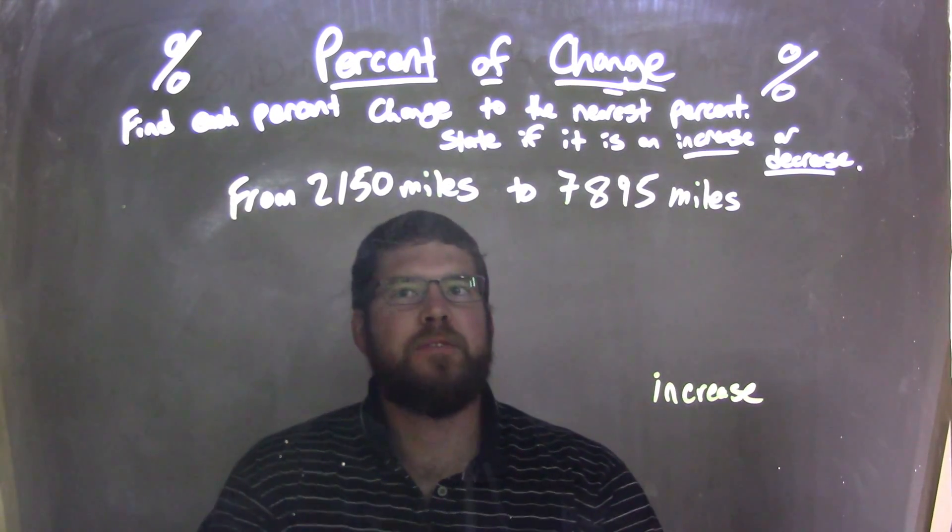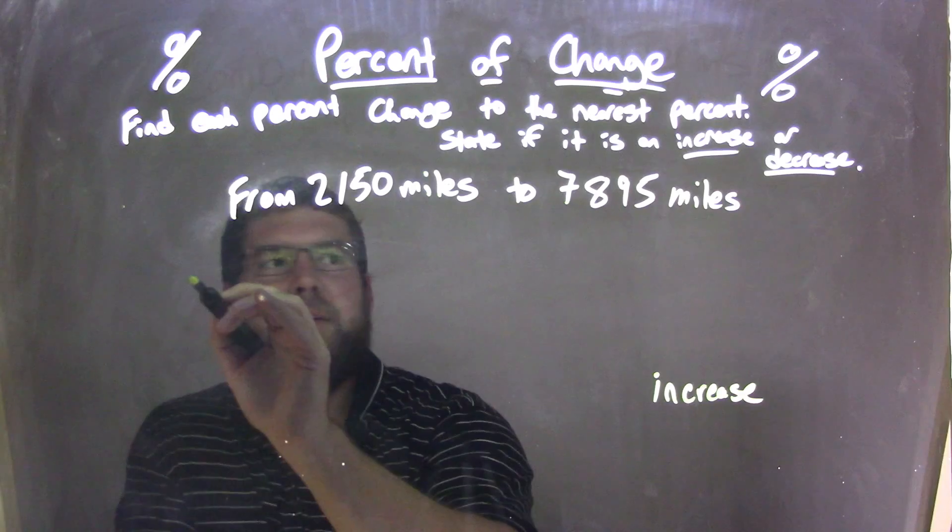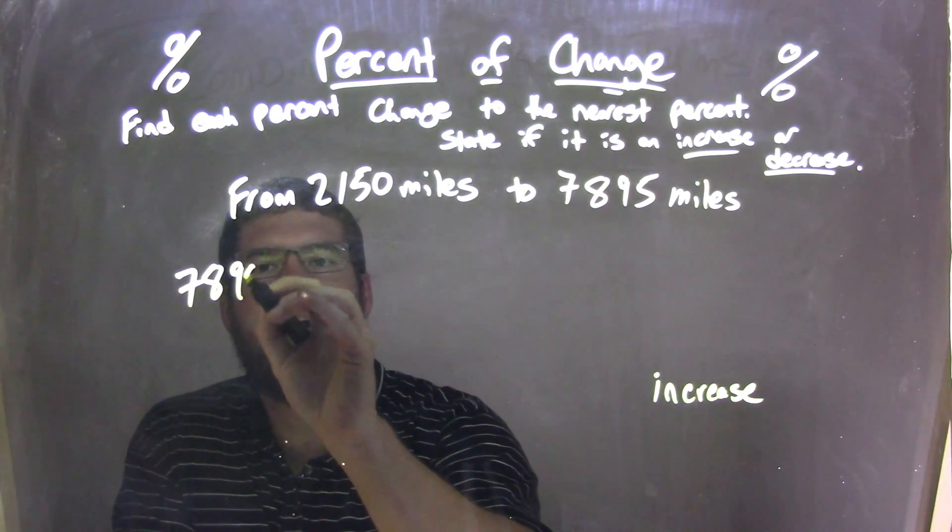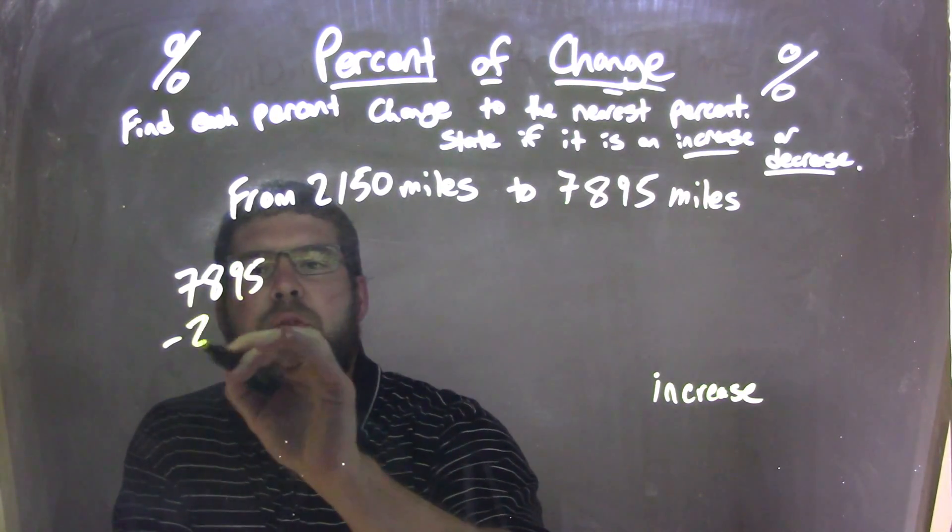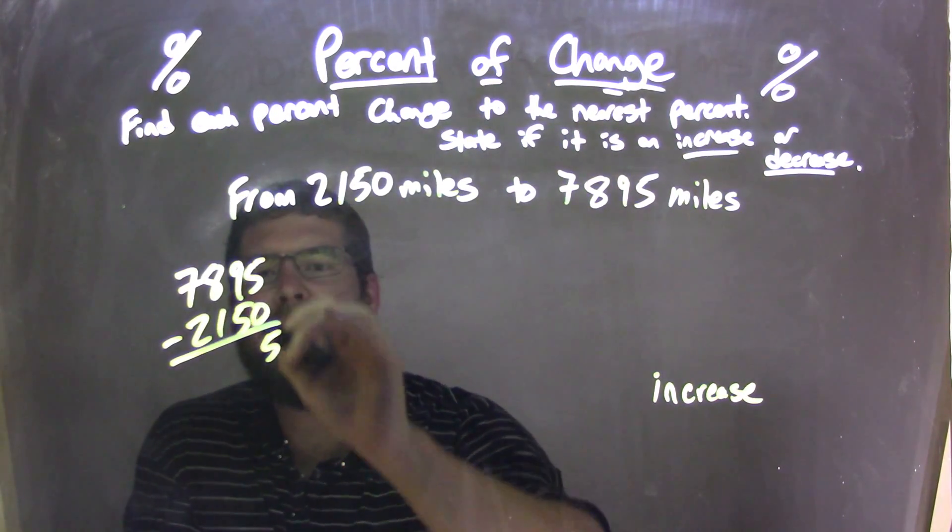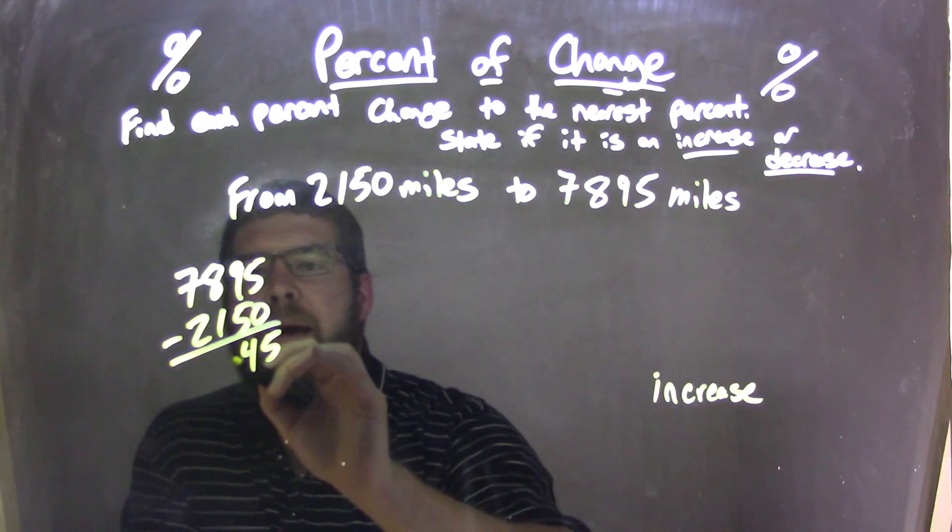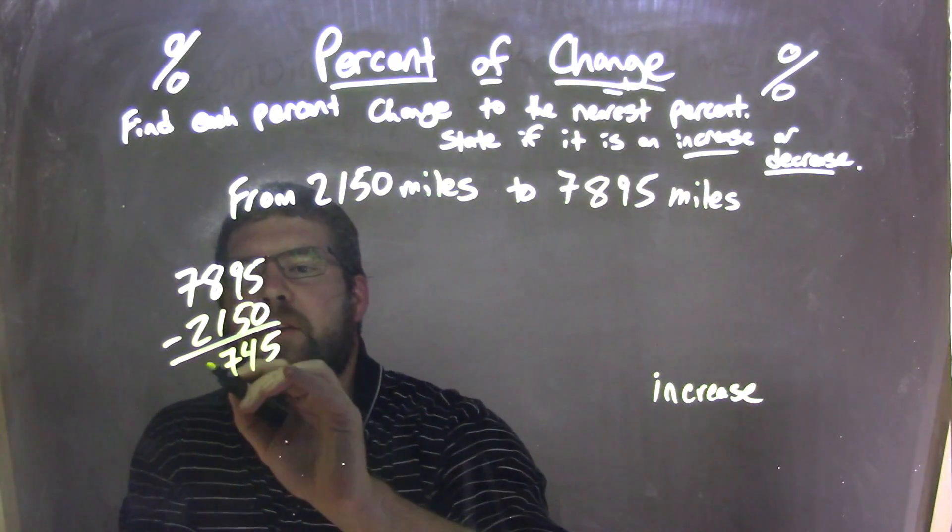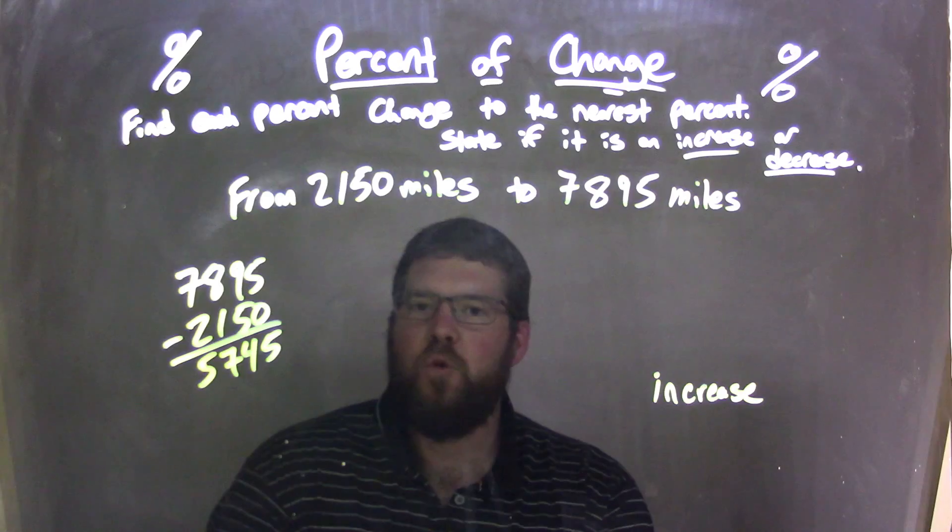Now I need to find the difference between these two numbers. So I'm going to subtract them here, take the large number, 7,895, and subtract it with the smaller number, 2,150. 5 minus 0 is 5, 9 minus 5 is 4, 8 minus 1 is 7, and 7 minus 2 is 5. So we're left with 5,745.